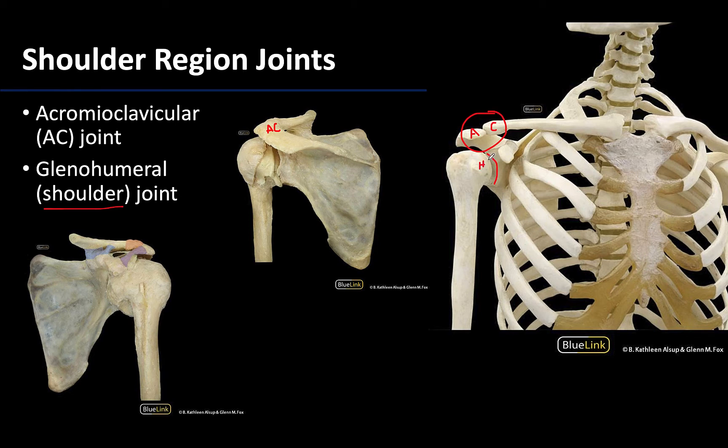Notice how close these joints are to each other — the AC joint is located just superior to the shoulder joint.